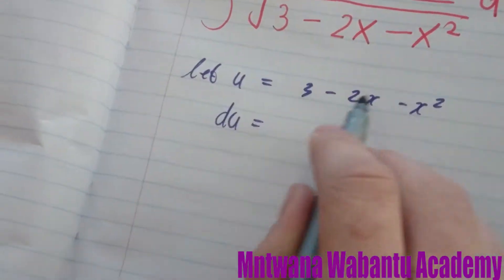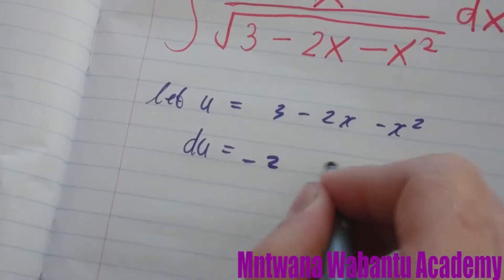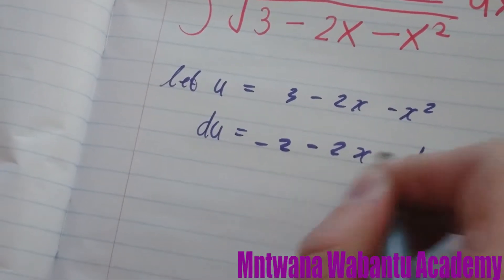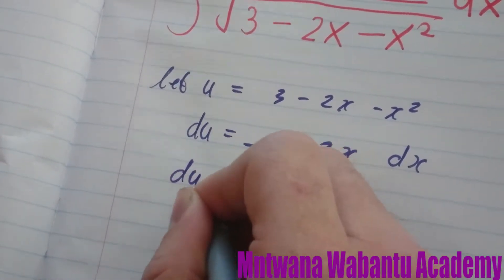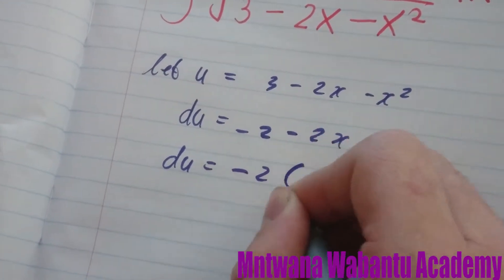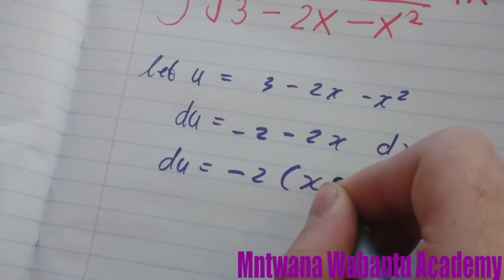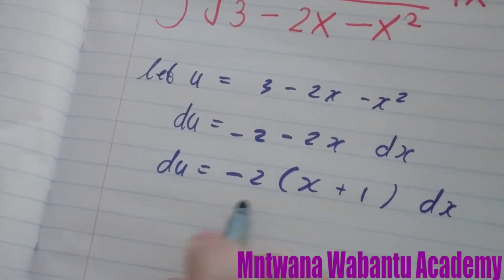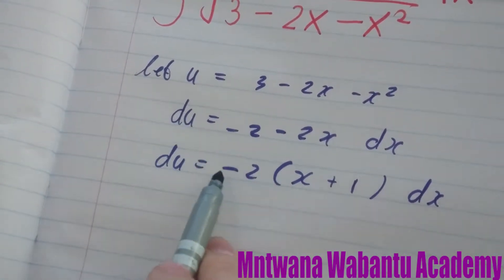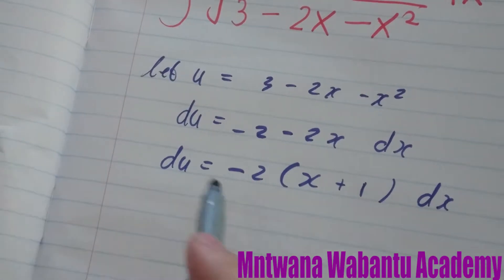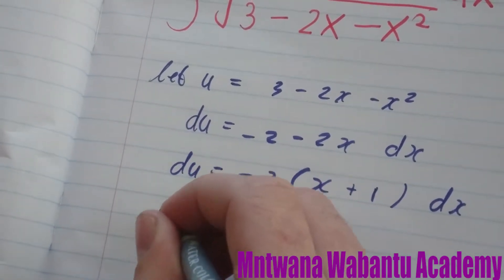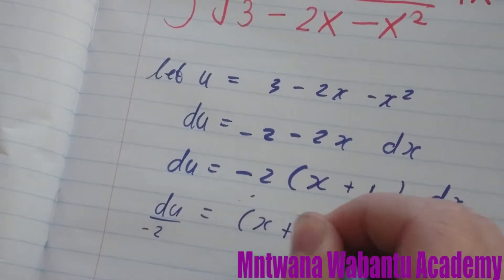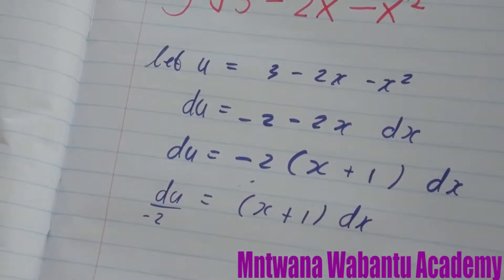Then our du is going to be equal to minus 2 minus 2x dx. We can take out 2, so du equals minus 2 times (x plus 1) dx. We can divide by negative 2, so du over negative 2 is going to be equal to (x plus 1) dx.